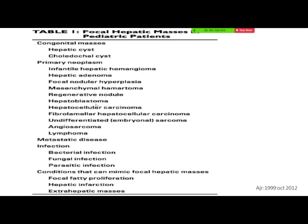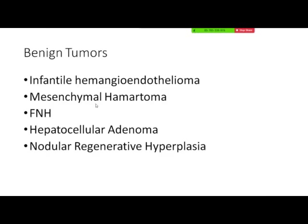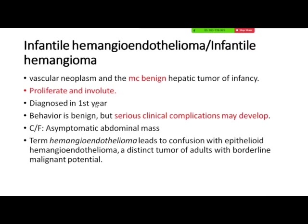In the category of benign tumors, the important ones are infantile hemangioendothelioma, mesenchymal hamartoma, FNH, hepatocellular adenoma, and nodular regenerative hyperplasia. The most common presentation in a neonate or child is infantile hemangiomas.